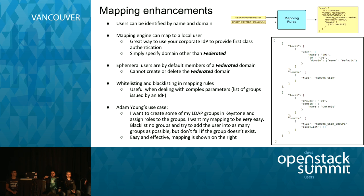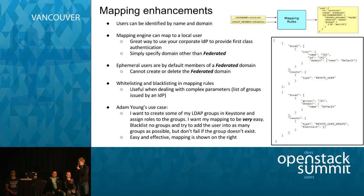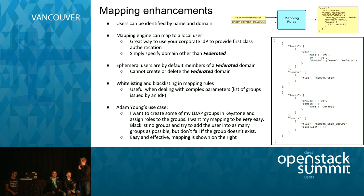You always need to define the maximum set of groups a user will become a member of. This is an example of a very simple mapping set: you map all groups stored in the parameter called remote user groups. You're not blacklisting anything — you could blacklist for negative filtering, or use whitelisting for positive filtering. The mapping engine will then try to match all existing groups in Keystone.